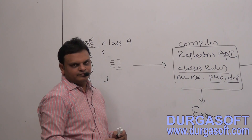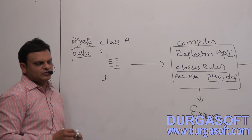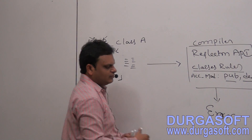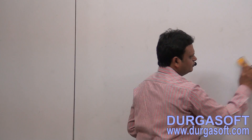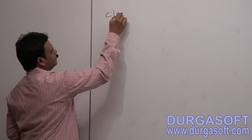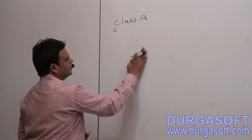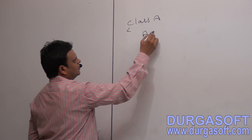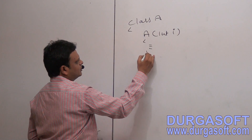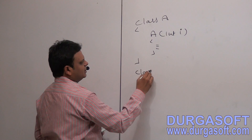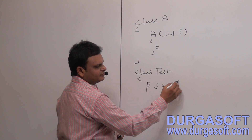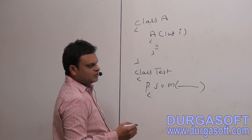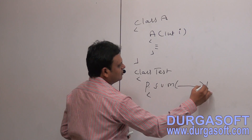This is one example. Next, let's take an example in the case of JVM. For example, I have taken class A. In class A, I have declared some constructors with integer parameters along with some implementation. In class Test, I have given public static void main with a String array argument, with throws Exception.